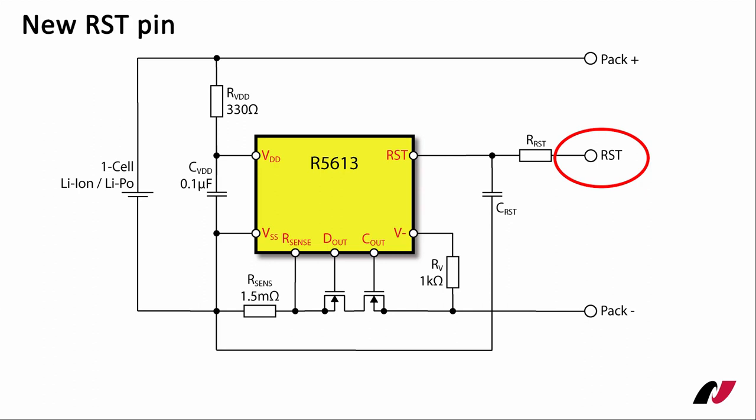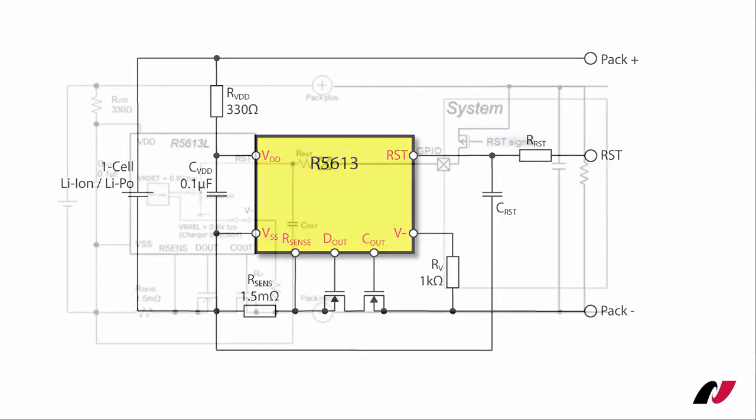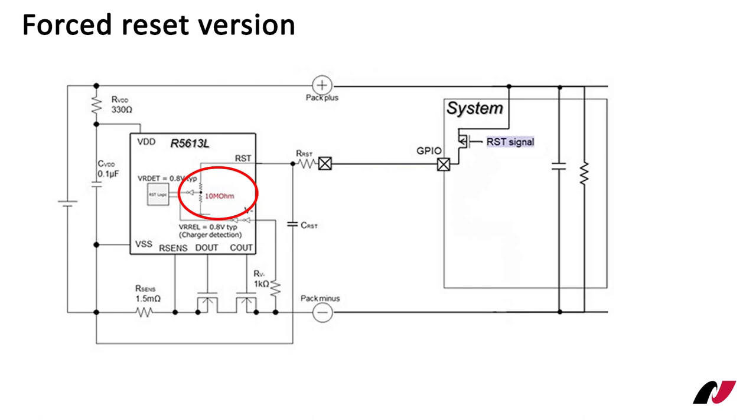A new reset pin enables manual control of the external MOSFETs. The RSD pin has two optional functions which are selected by the product version. The RSD input has an internal resistor to pull it down and is controlled by a p-channel open drain output type. The reset function becomes active when the RSD pin is high. The IC turns off the charge and discharge control MOSFETs to disconnect the battery from the charger. The purpose of the forced reset version is to be able to test the leakage current of the battery pack in the mass production process. The reset function is released by returning the RSD pin to a low level again.